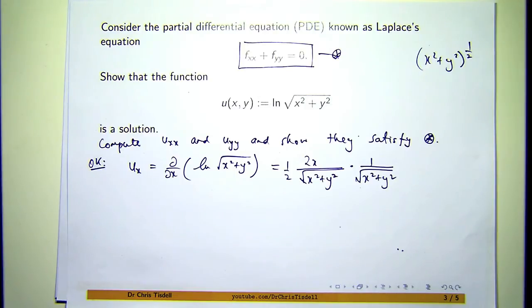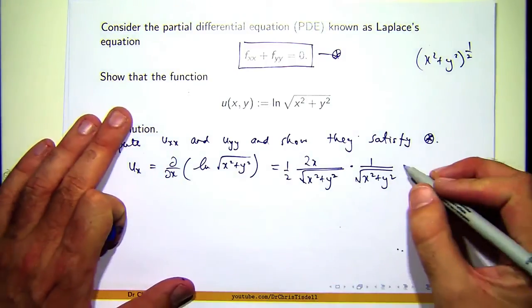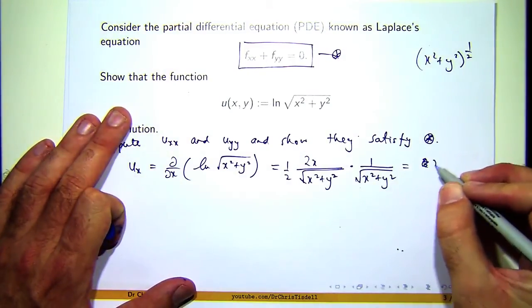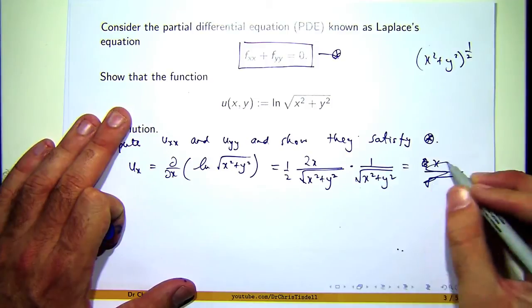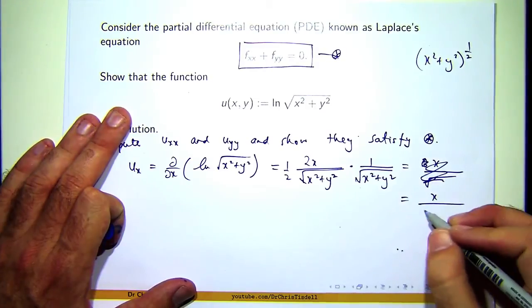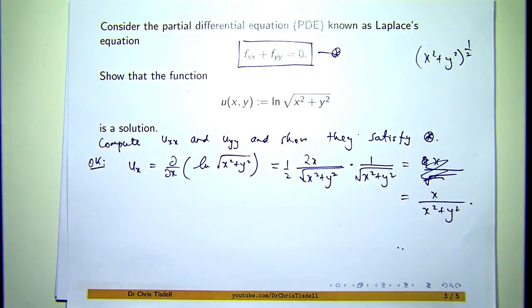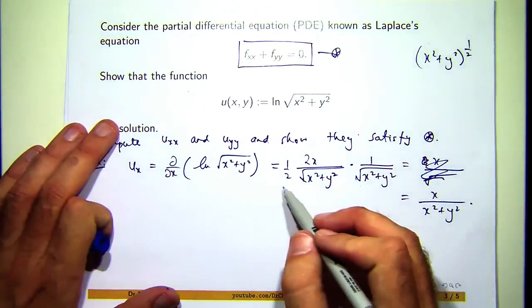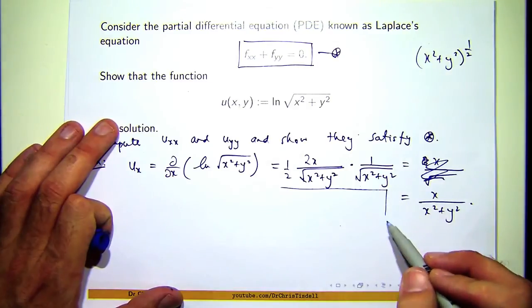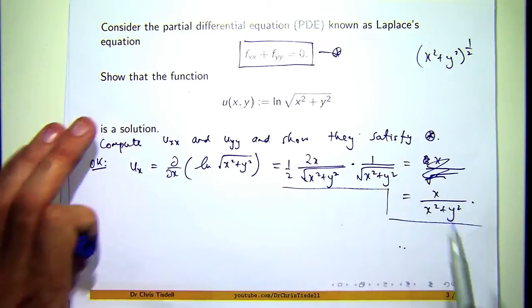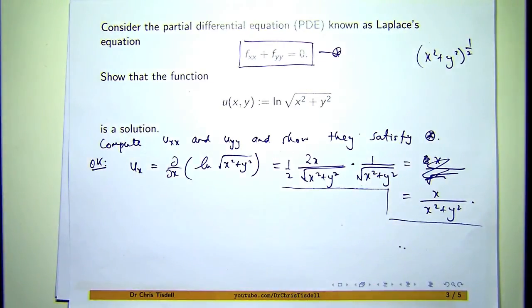So if you simplify that a little bit, the square roots are going to cancel out. The two and a half will cancel out. So I'm left with this. When you multiply them together, a square root times a square root just gives you a power of one.